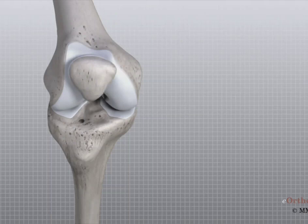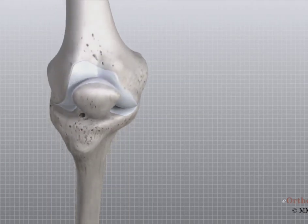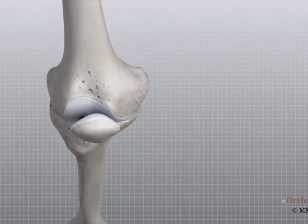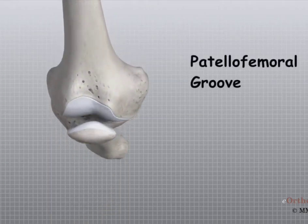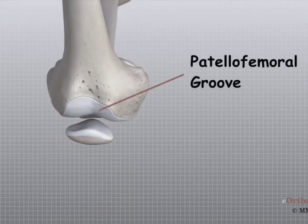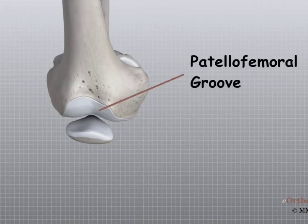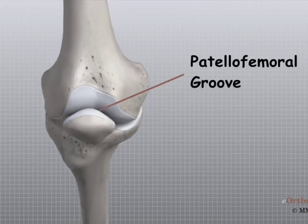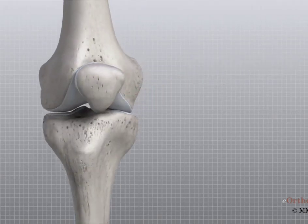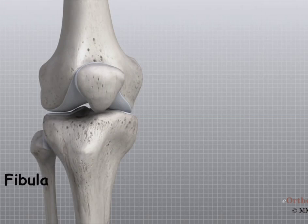The patella glides through a special groove formed by the two femoral condyles called the patellofemoral groove. The smaller bone of the lower leg, the fibula, never really enters the knee joint. It does have a small joint that connects it to the side of the tibia, and this joint normally moves very little.